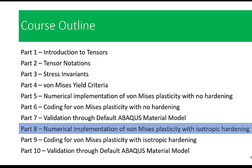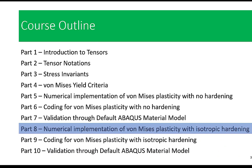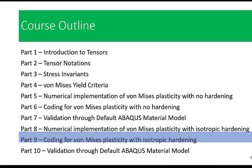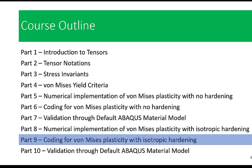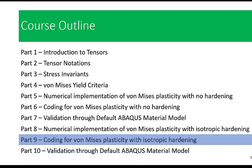In part eight, we will delve into the implementation of Von Mises plasticity with isotropic hardening. Isotropic hardening is a crucial concept and we will break it down step by step. Part nine is where we get hands-on again as we delve into the coding of Von Mises plasticity with isotropic hardening. We will explore the coding intricacies and ensure you are well equipped to implement this advanced model.